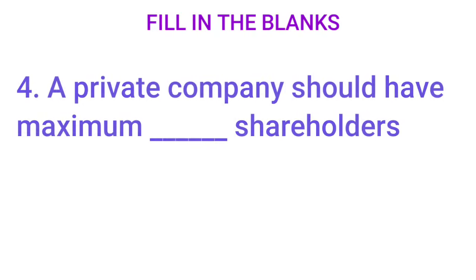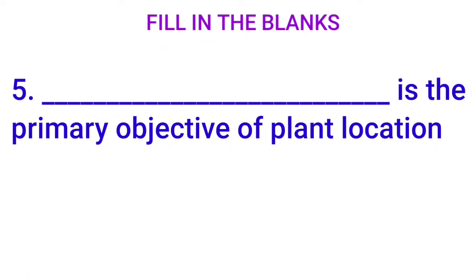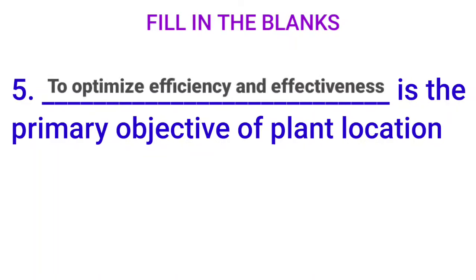Fourth: 'A private company should have maximum dash shareholders' — a private company has a minimum of 2 and maximum of 200 members. Fifth: 'Dash is the primary objective of plant location' — when selecting the best location for a business, the goal is to minimize cost and maximize production efficiency to reach customers. The answer is to optimize efficiency and effectiveness. Sixth: 'Planned location decision is a dash commitment' — the answer is long-term commitment.